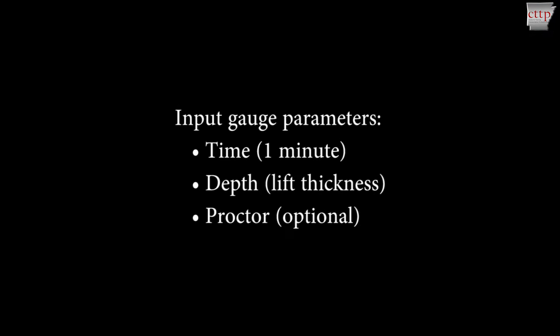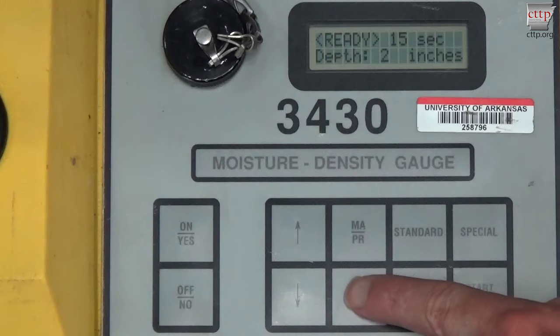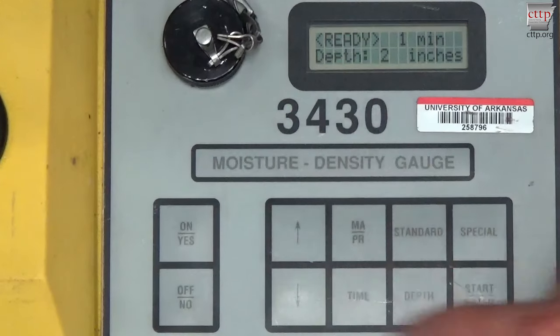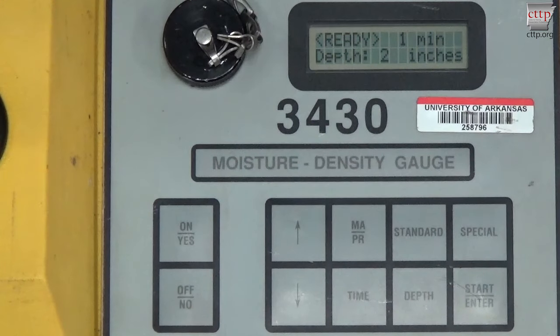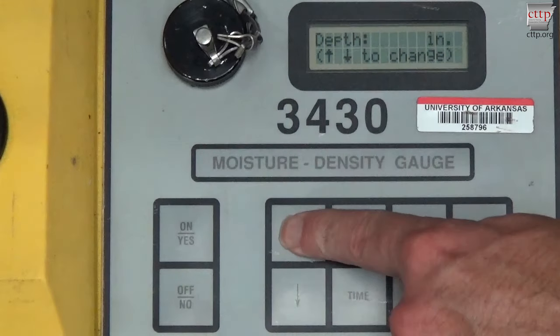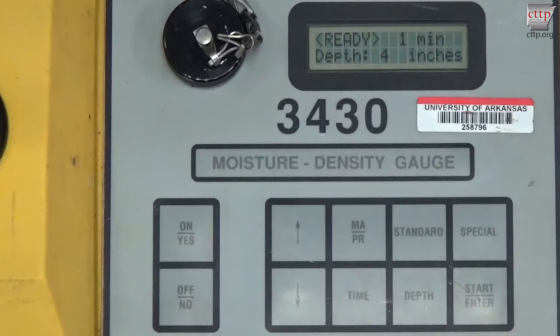Input the gauge parameters for time, depth, and the proctor value. Set the test time to one minute by pressing the time button. Use the up or down arrow keys to set the time. Press the yes button to store the selection. Set the depth to the test depth, which should be equal to the lift thickness, by pressing the depth button and using the up or down arrow key until the proper depth shows on the screen. Press the yes button to store.